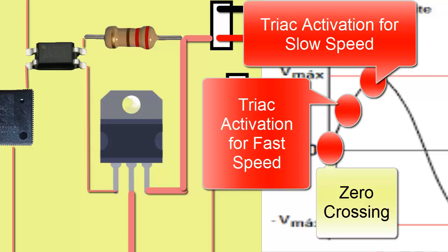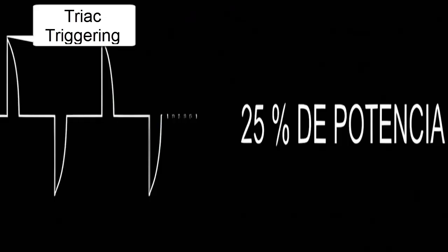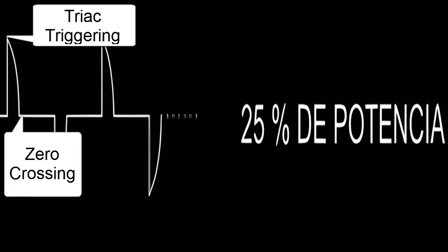In the graph, we observe the moment when the triac fires, corresponding to a fan speed required by the user of 25%.